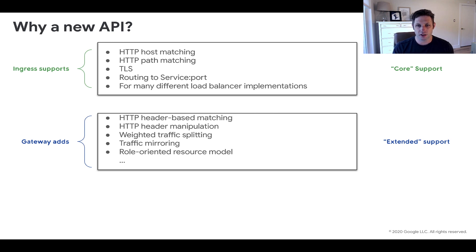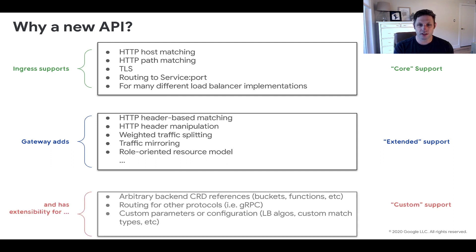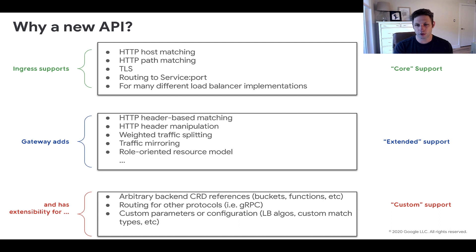It adds weighted traffic splitting, mirroring, a role-oriented resource model, and much more. It also has extensibility and extension points built natively into the API for future enhancements. It supports referencing arbitrary CRDs as backends, which enables a route to point to other Kubernetes resources that might represent something like a storage bucket or a function.